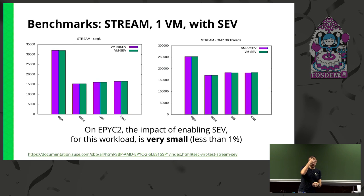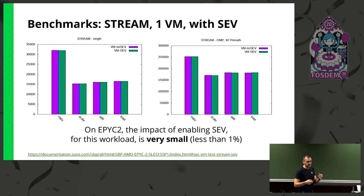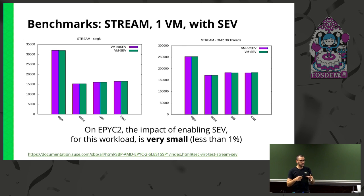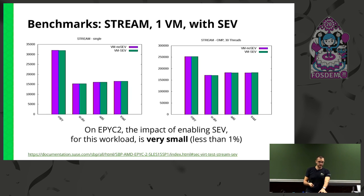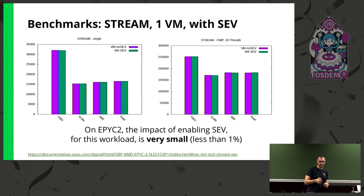What about the overhead of secure encrypted virtualization, where VM memory is encrypted? As a matter of fact, for this benchmark the overhead is very small. On paper you find it stays within three percent; in these measurements it stayed within one percent.